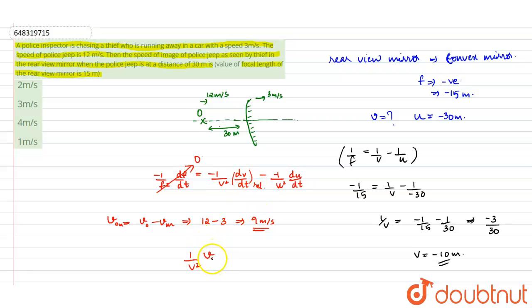v_im, the relative velocity, equals 1/u² v_om. This gets cancelled. So v_im equals v²/u² × v_om.